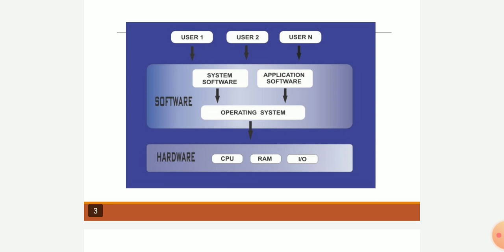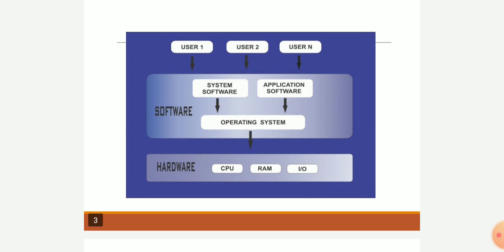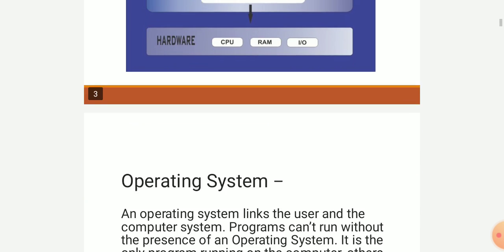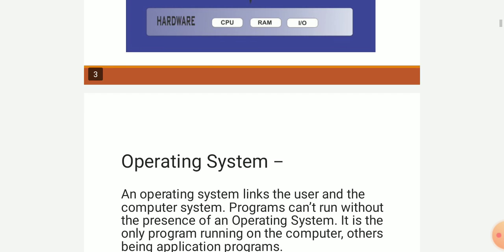This diagram of an operating system shows that it works as an interface between hardware and user. Hardware includes the CPU, RAM, and input/output devices. There are two other types of software: system software, which is inbuilt, and application software, which we download to solve problems. This is the basic definition — the OS provides an interface between computer hardware and user.